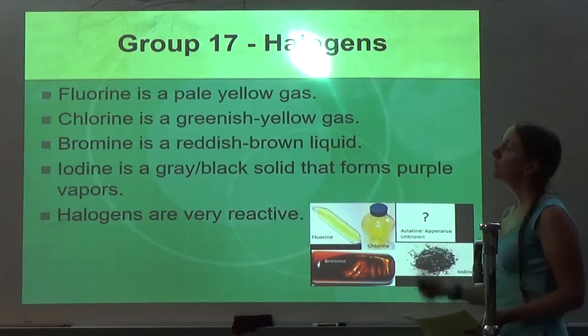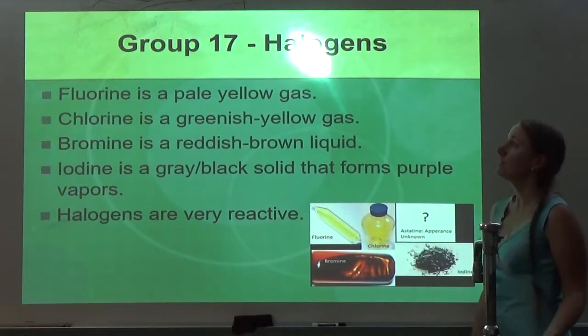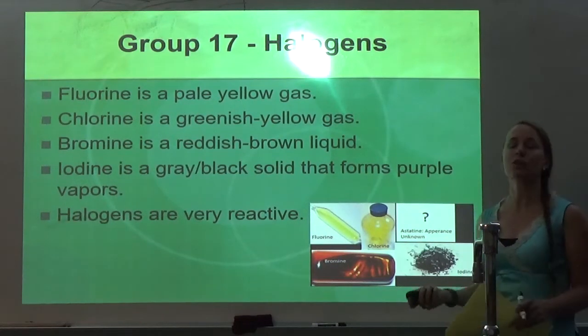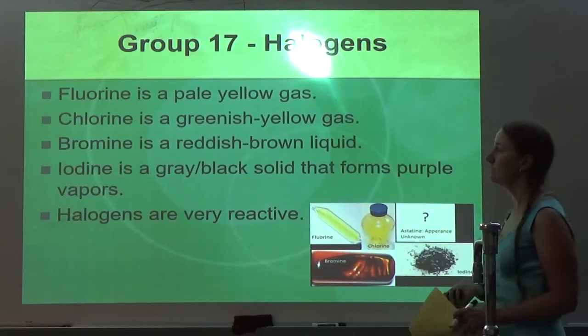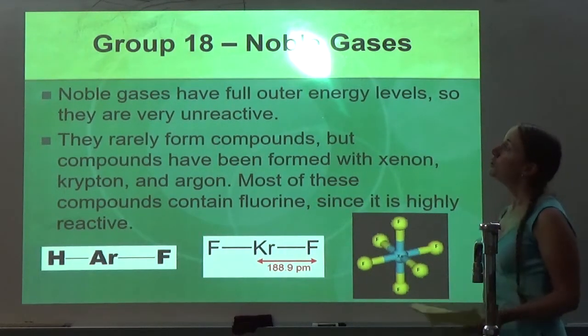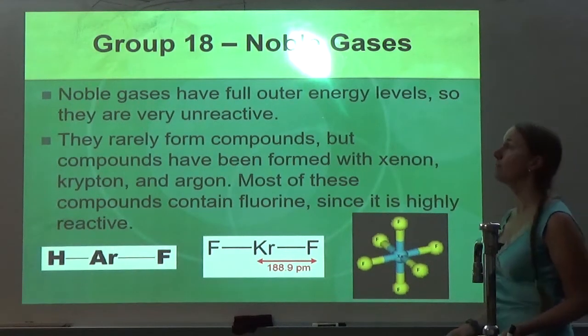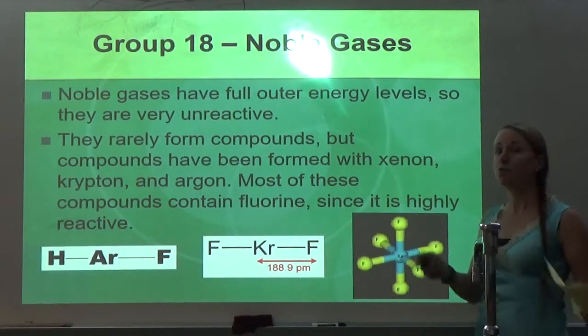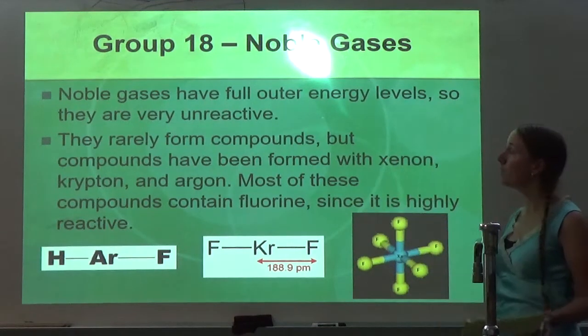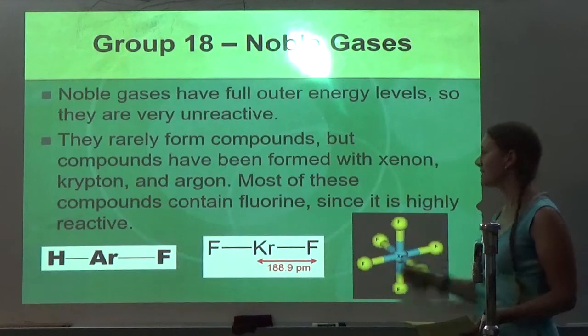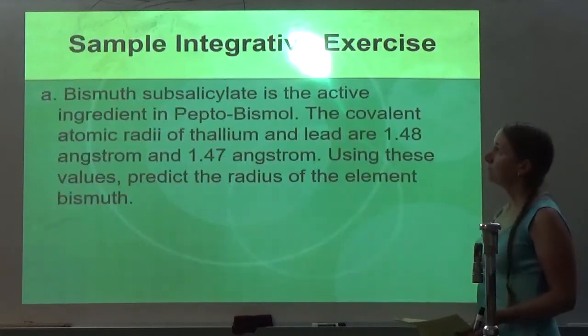So now let's focus on the halogens. That's group 17. Fluorine is just a pale yellow gas. Chlorine is a greenish yellow gas. Bromine is a reddish brown liquid, and iodine is a gray black solid that forms purple vapors. Halogens are very reactive. They are one electron away from having a stable noble gas configuration. And then last column, of course, is group 18, the noble gases. Noble gases have full outer energy levels, so they are very unreactive. That means their electron configuration is s2p6, full eight valence electrons. They rarely form compounds, but compounds have been formed with xenon, krypton, and argon. Most of these compounds contain fluorine since it is highly reactive.